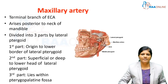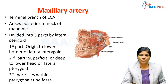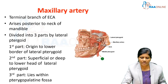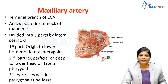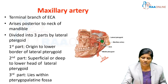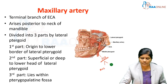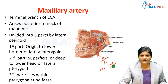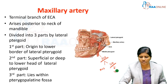The maxillary artery is the terminal branch of the external carotid artery. The external carotid artery has two terminal branches: the maxillary artery in the infratemporal fossa, and the superficial temporal artery, which runs in the temporal fossa and supplies the structures there.